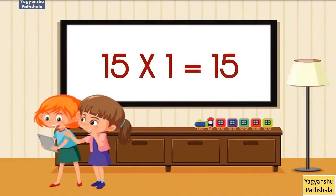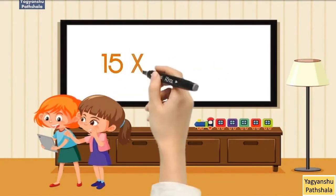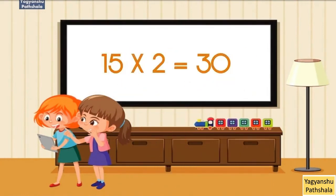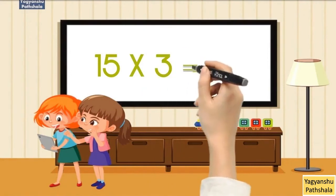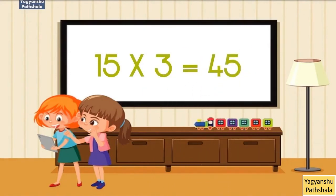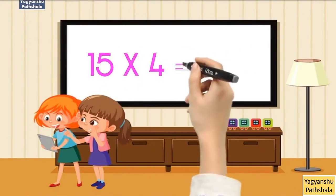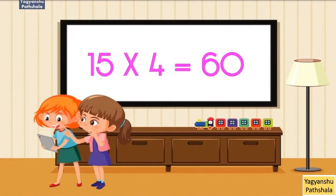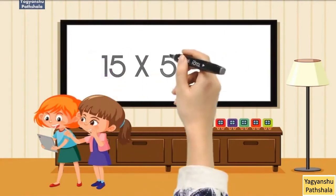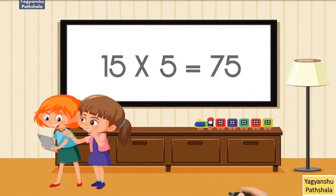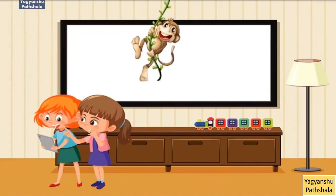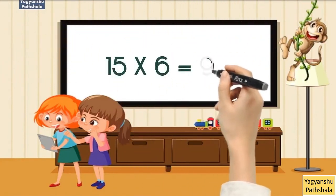15 times 1 equals 15. 15 times 2 equals 30. 15 times 3 equals 45. 15 times 4 equals 60. 15 times 5 equals 75. 15 times 6 equals 90.